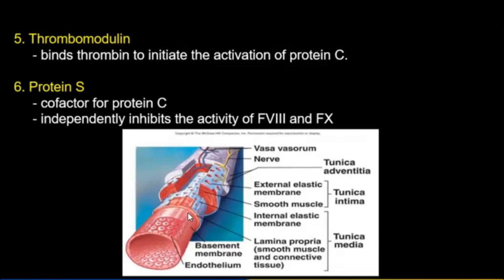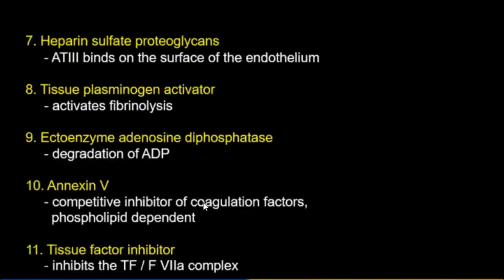The vascular wall structure includes: basal membrane, lamina propria, tunica media, tunica muscularis, tunica intima, and adventitia. Remember that in all vessels there are structures: vasa vasorum and nervi nervorum — vessels of the nerves and nerves of the vessels.